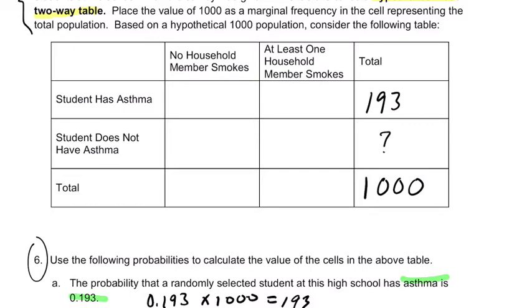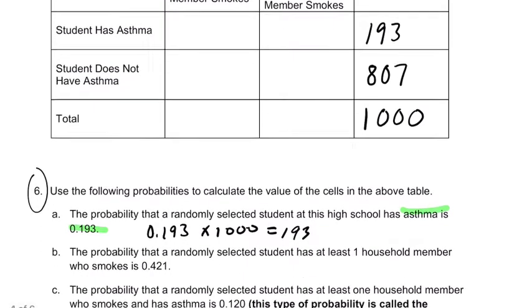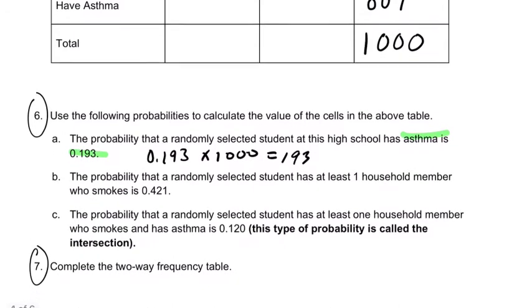193 plus something has to equal 1,000, so you can figure it out by subtracting 193 from 1,000. That's 807. Now, next one.